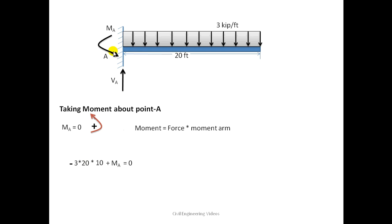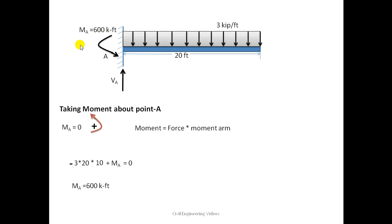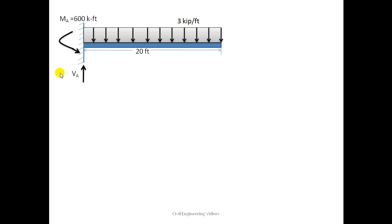VA and the horizontal reaction passing through point A do not create any moment. Only the UDL creates the moment and MA is the reaction moment about point A. Solving, MA is equal to 60, acting at point A.